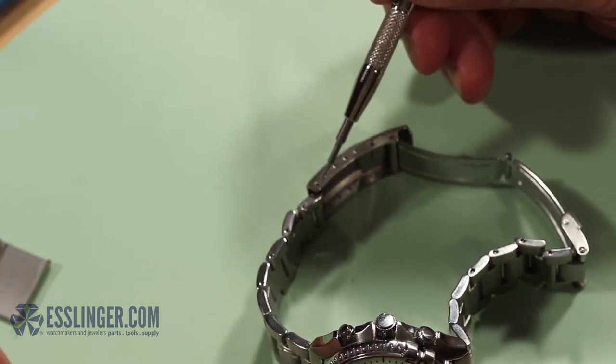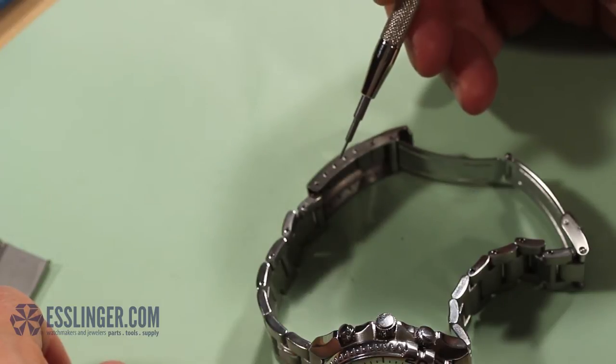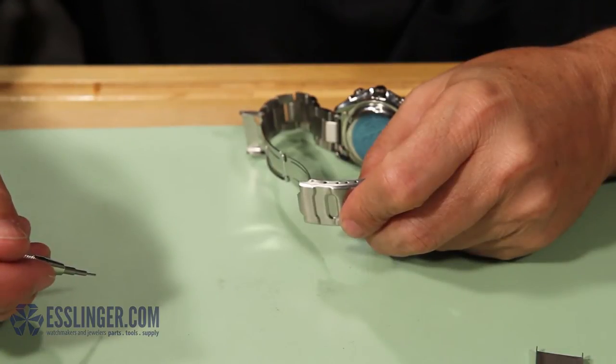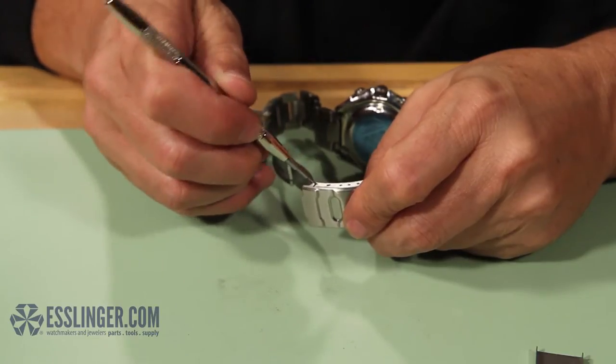Turn the watch case on its side so that the crown is facing up and hold the band so you can reach the inside of the clasp with your spring bar tool. Take the pointed end of your spring bar tool and insert it into the hole in the top of the clasp where the end of the spring bar is held in place.